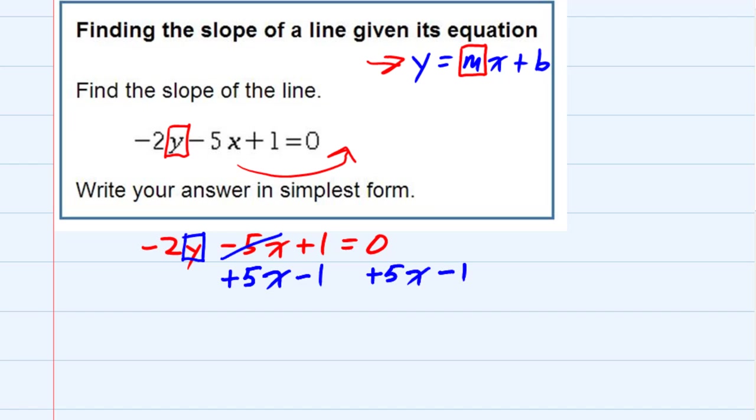That allows me to cancel out the 5x's and cancel out the 1's, and I'm left with a negative 2y on the left hand side. On the right hand side, 0 plus 5x minus 1 is just 5x minus 1.